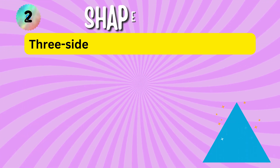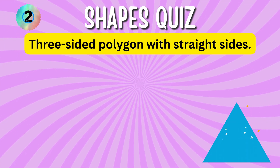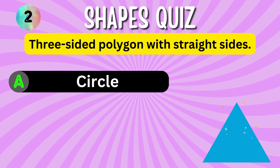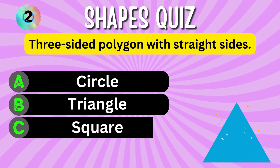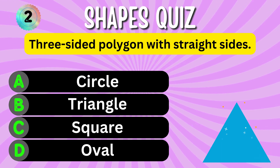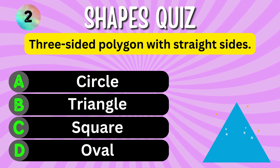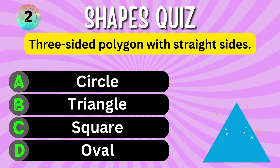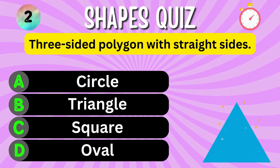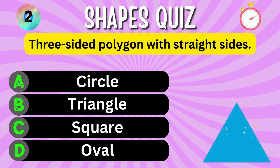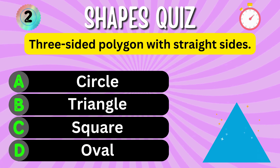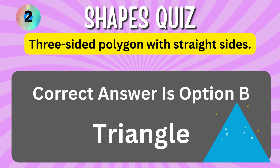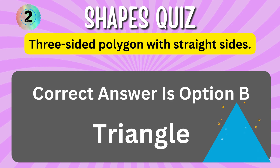A three-sided polygon with straight sides. Option A. Option B. Option C. Option D. You have 5 seconds to choose the correct answer. Your time starts now. The correct answer is Option B, Triangle.